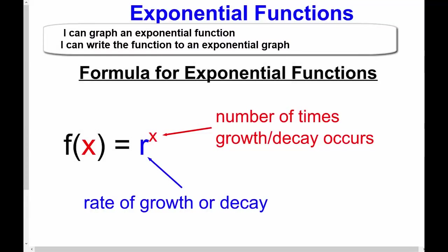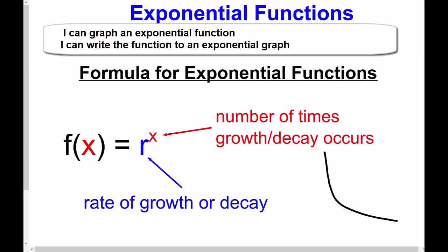In the last video we talked about an introduction to exponential functions. Exponential functions are not straight lines — they're curved lines where they increase rapidly. Today we're going to see that exponential lines can also decrease rapidly, and also look at graphs and how to get the function written down. The formula for an exponential function is f(x) = r^x, where r is the rate of growth or decay.